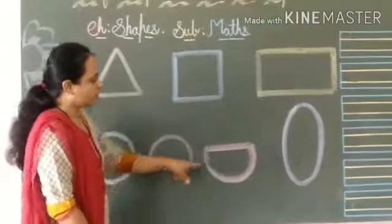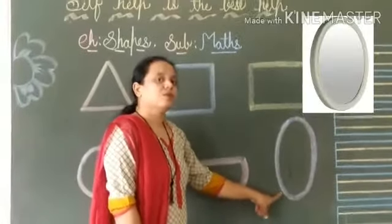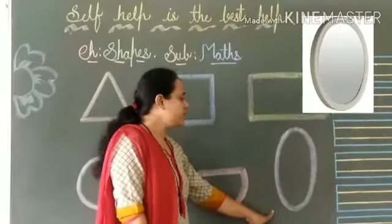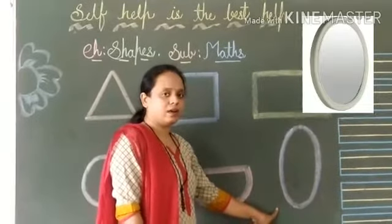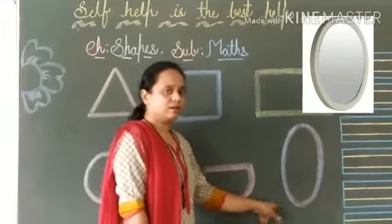And then the last one is oval shape. Oval shape looks like an egg.